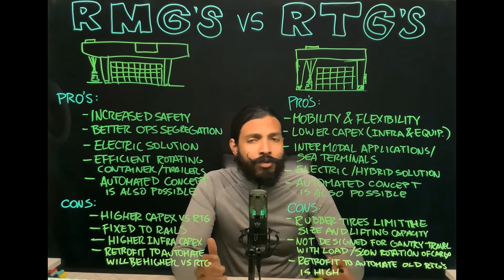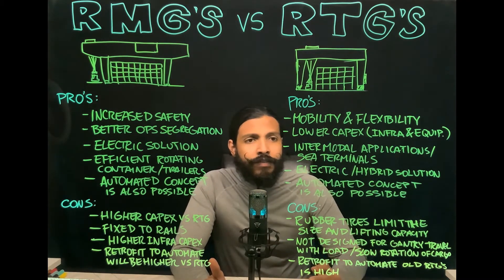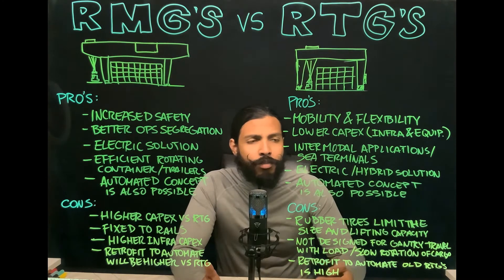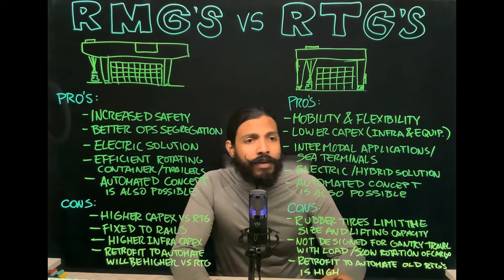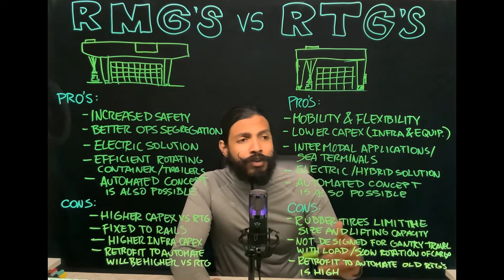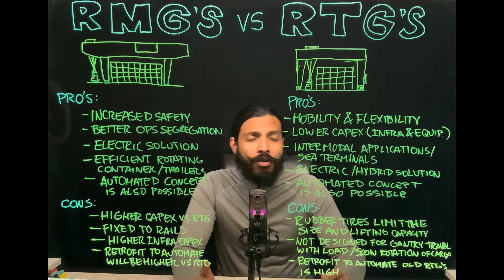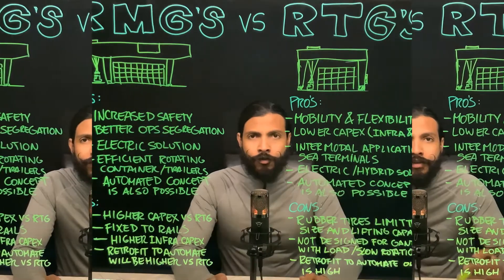When it comes to power sources, we have electric and hybrid solutions — there are still diesel RTGs, but more and more the hybrid and electric solutions are the most in demand in the market. RTGs can also be automated, and as always, you just need to keep in mind your way of working and what automation level you want to achieve.